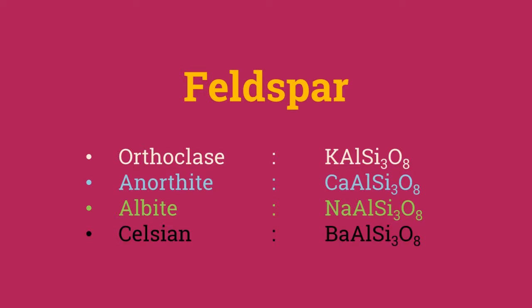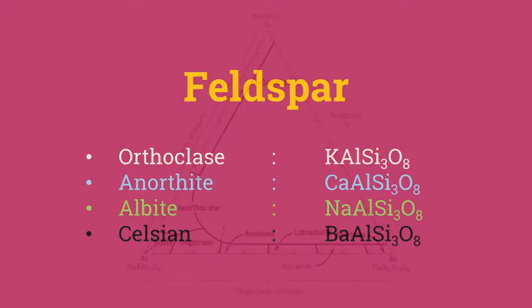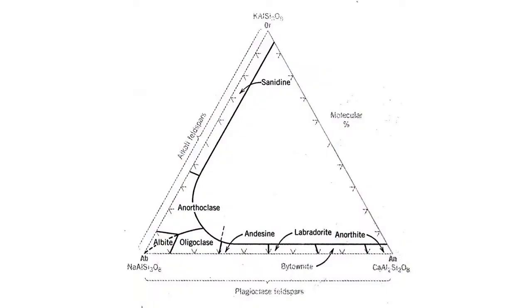Depending on the cations, Feldspar may be called orthoclase, anorthite, albite, or celsian if it has potassium, calcium, sodium, or barium respectively in its voids. Most Feldspar in the solid solution series can be classified as a ternary system of sodium-rich albite, potassium-rich orthoclase, and calcium-rich anorthite. Compositions between albite and anorthite are called plagioclase Feldspar.